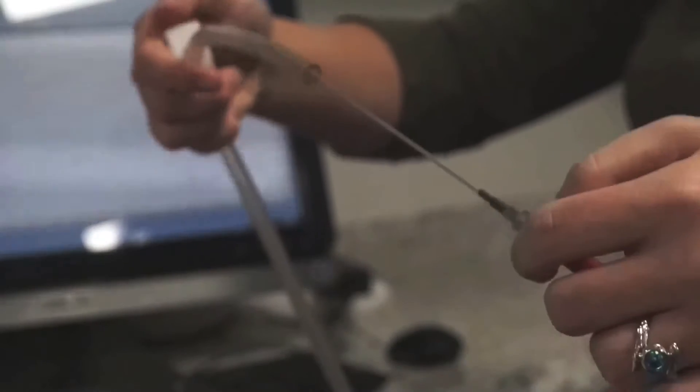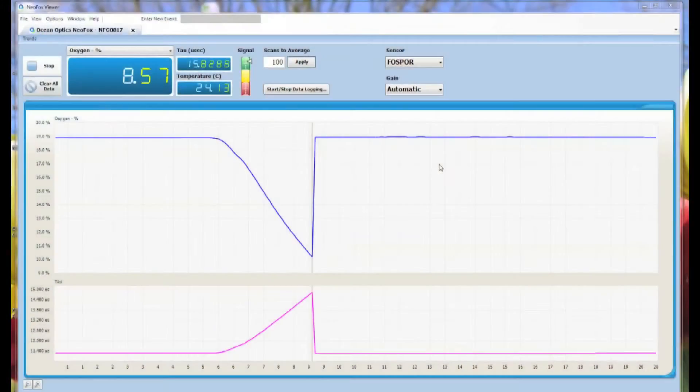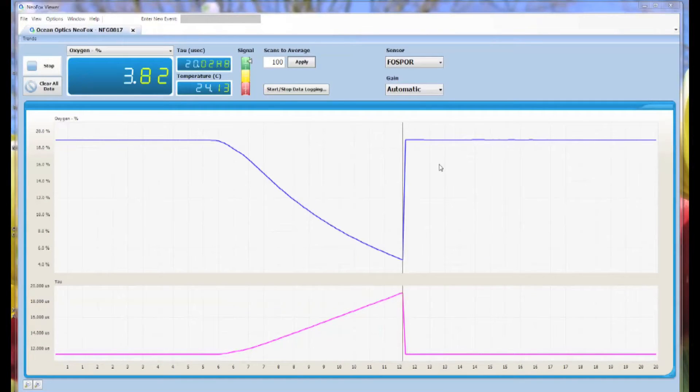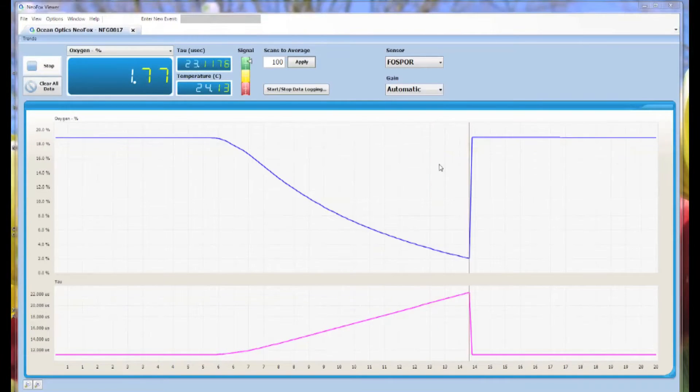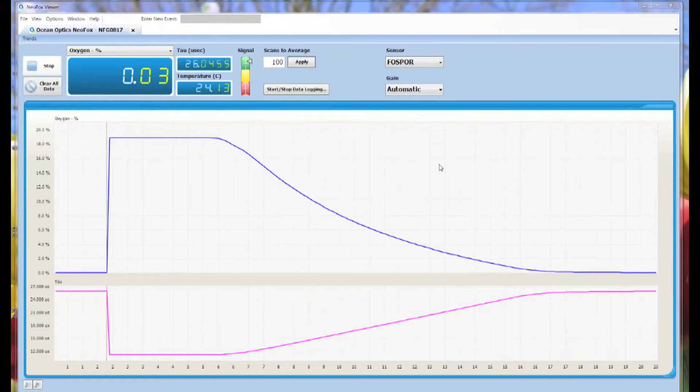For your 0% oxygen point, simply release the gas over the tip of the probe until your signal stabilizes in the NeoFox viewer. Depending on the type of probe and chemistry you have, this can take anywhere from 10 seconds to a minute and a half.